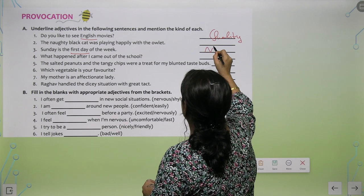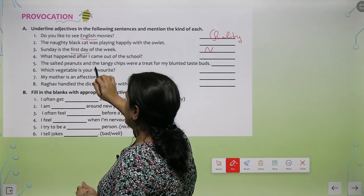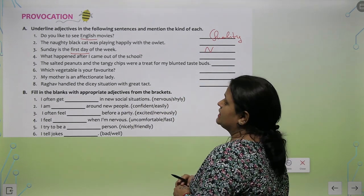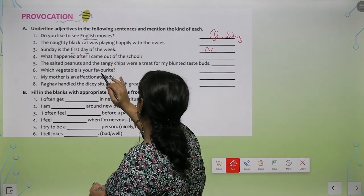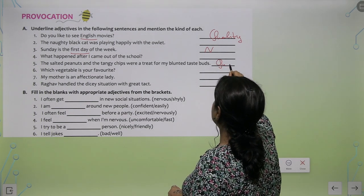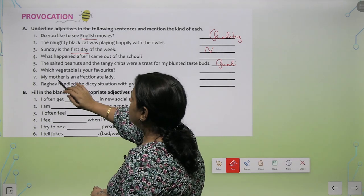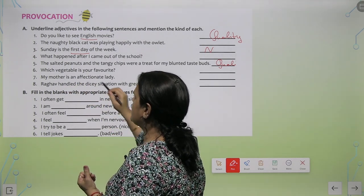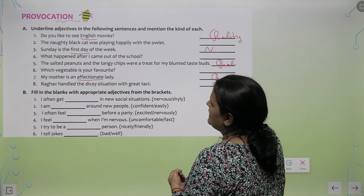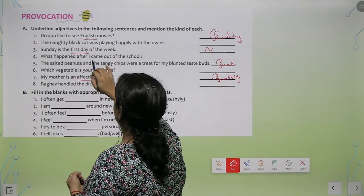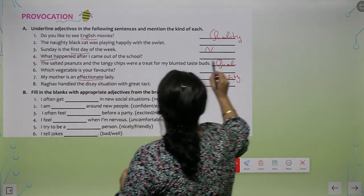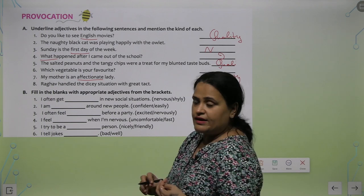'The salted peanuts and the tangy chips were a treat for my blunted taste buds.' Peanuts are salted, chips are tangy, and taste buds are blunted — so this is also adjective of quality. 'My mother is an affectionate lady' — this is the quality of my mother, so this is also adjective of quality. 'What happened after I came out of the school?' — so this is interrogative. The rest of the examples I am leaving for you.